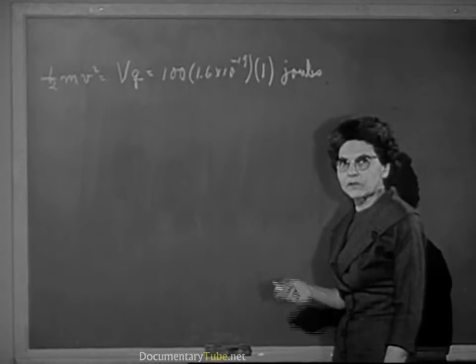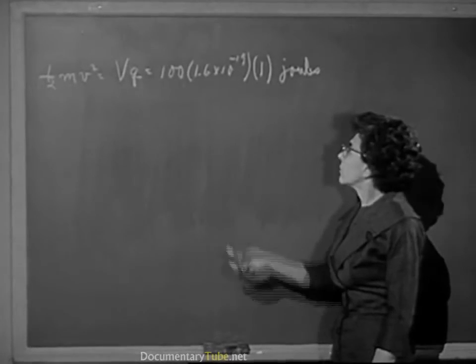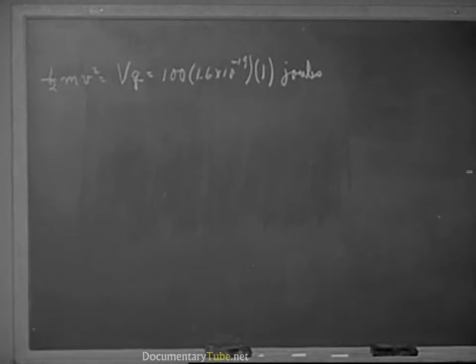Now let's turn on the magnetic field, which will change the direction of the electrons but of course won't change the kinetic energy. As we increase the field, we increase the deflecting force on the beam. The magnetic field is perpendicular to the path of the electrons everywhere on the path. Thus, the magnetic force is the centripetal force acting on the electrons.